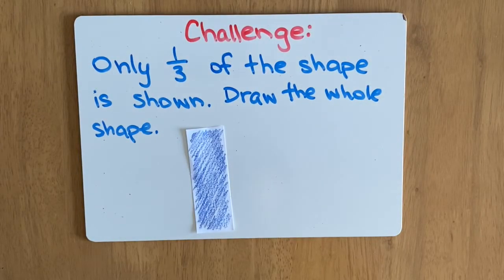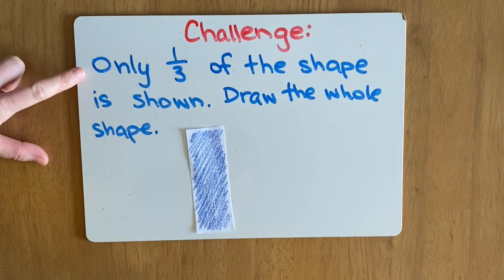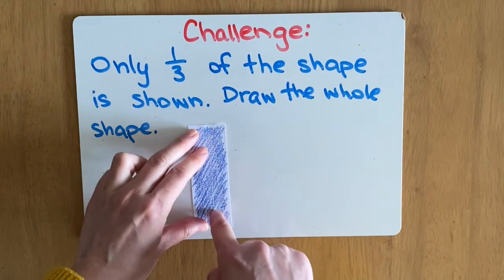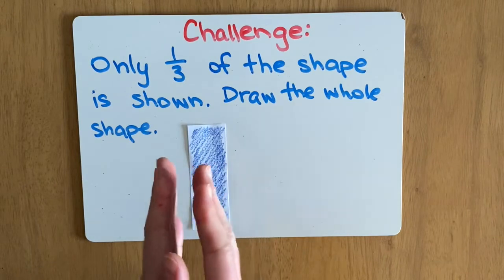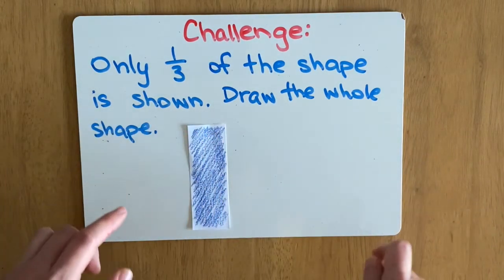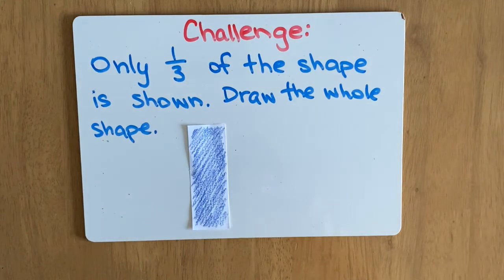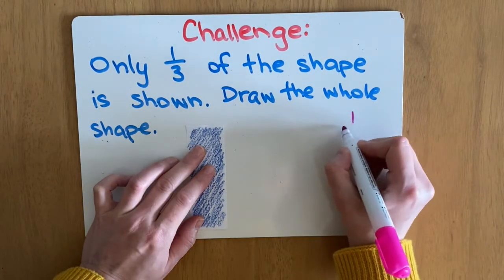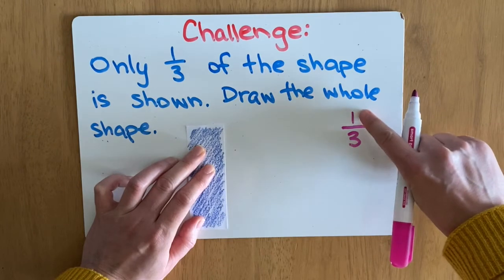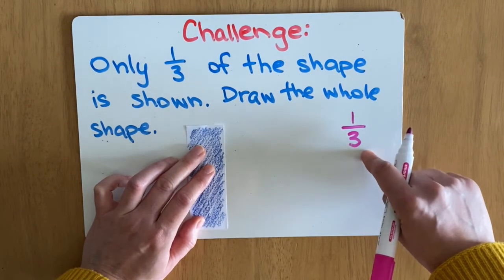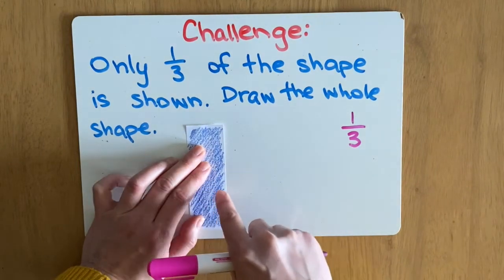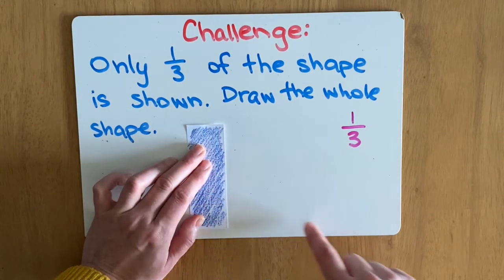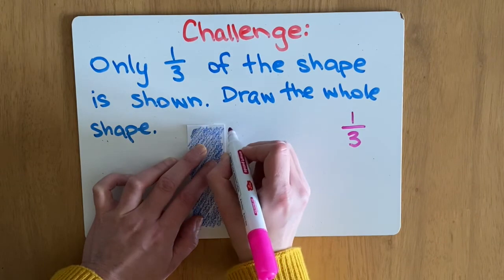This is challenge number two. Only one-third of the shape is shown — draw the whole shape. So this is only showing one-third, only part of the shape, and we want to draw the whole thing. If this is one-third, that means we need to draw two more parts, because one-third means it's split into three equal parts. Right now we can only see one part, so we need three parts altogether and all of those parts need to be the same size as this blue strip.